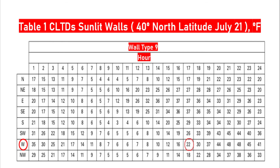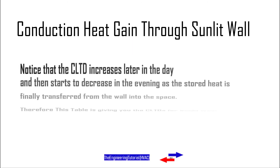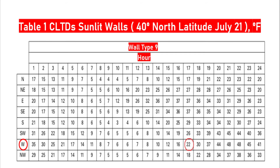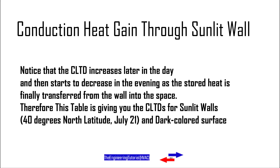A particular table includes CLTD factors for the west-facing wall similar to the type used in our example building. The data in this table are based on the following assumptions: the CLTD increases later in the day and then starts to decrease in the evening as the stored heat is finally transferred from the wall into the space. This table gives CLTDs for sunlit walls at 40 degrees north latitude, July 21st, and dark-colored surface.